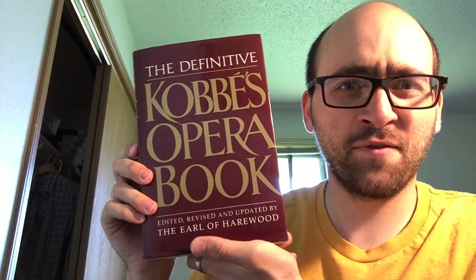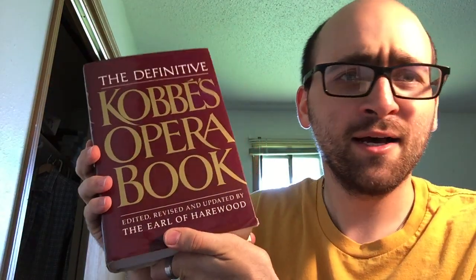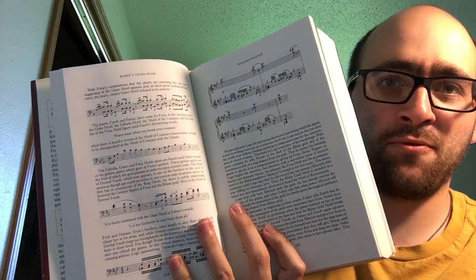And then another book I'm going to be reading a little bit from, it's not really a major reading project or anything, but I have The Definitive Kobbe's Opera Book, edited, revised, and updated by the Earl of Harewood. This is just a huge book of basically plot summaries of operas, and also occasionally you'll have things where it'll actually take you through some of the music, some of the major passages of music and some of the arias of each opera that's in here, and this has a ton of operas.